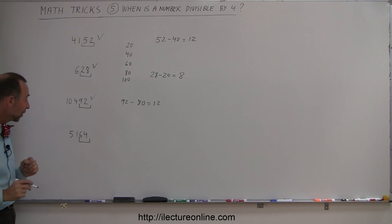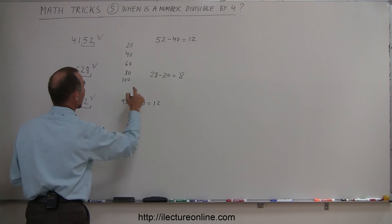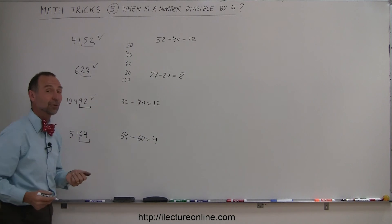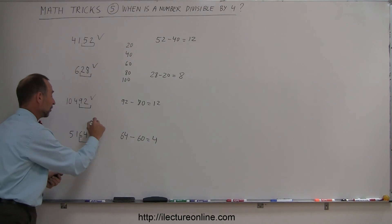And right here 5164, again you take 64 and subtract 60 from it, you end up with 4, and of course 4 is divisible by 4, and therefore this whole number is divisible by 4.